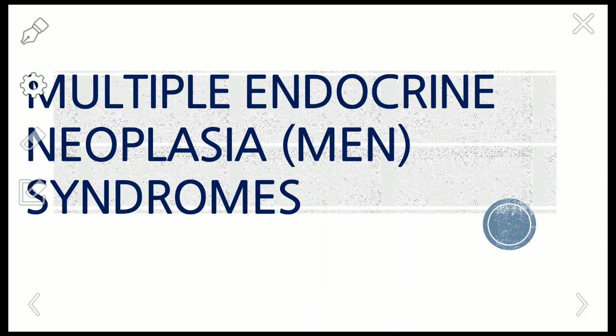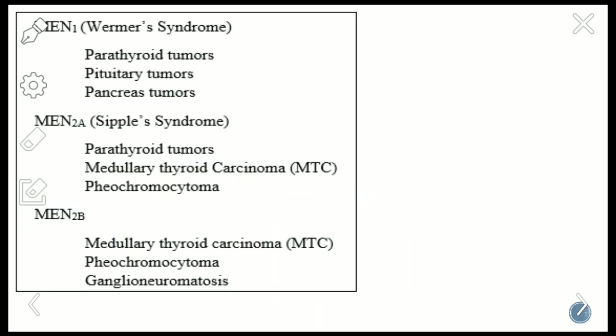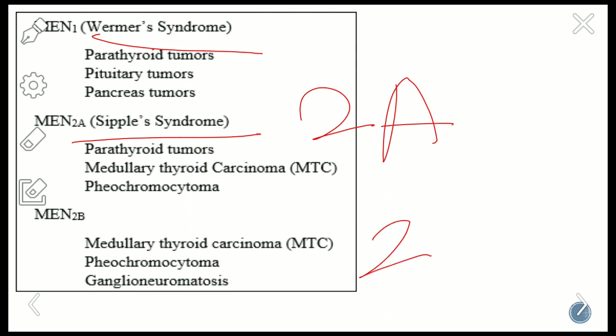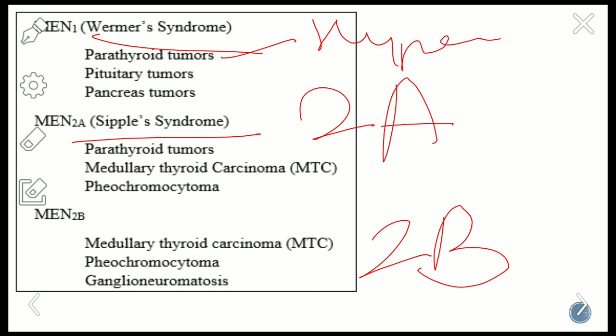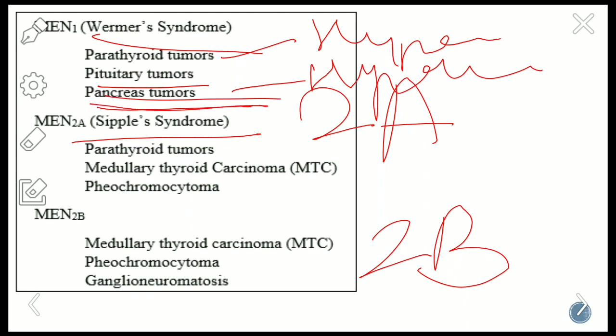Another syndrome is MEN syndrome — Multiple Endocrine Neoplasia syndrome. There are two types: MEN1 and MEN2, with MEN2 further divided into 2A and 2B. MEN1 is called Wermer syndrome, in which parathyroid tumors lead to hyperparathyroidism, pituitary tumors lead to hyperpituitarism, and pancreatic tumors lead to excess insulin secretion causing hypoglycemia. In MEN1: parathyroid, pituitary, and pancreas — remembered as PPP.